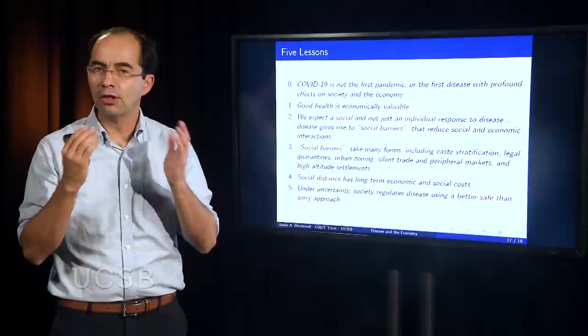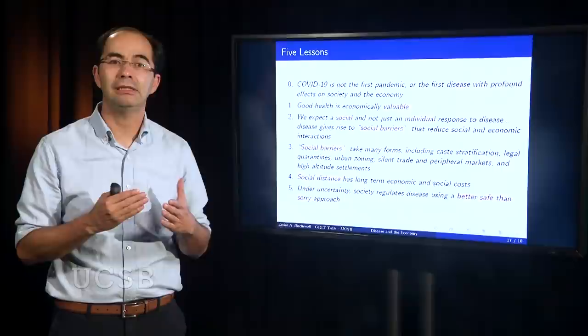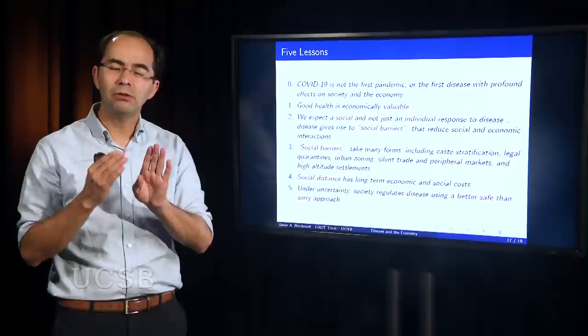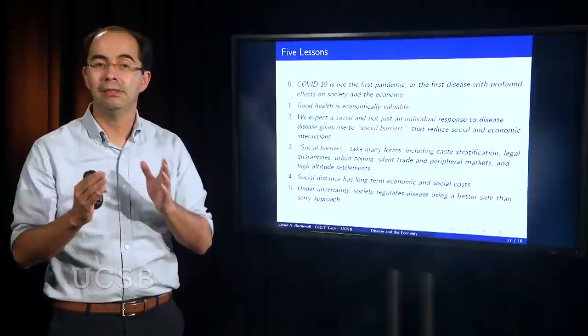These social barriers are not new. They take many forms, like stratification in terms of a caste system, legal quarantines, restrictions in urban zoning that I didn't talk about, trade protocols where we try to keep buyers and sellers apart or producers apart. Those are costly and they are likely to have long-term costs. So if we were thinking about COVID for the future, it's likely that we're going to have to do some social adjustments moving forward.